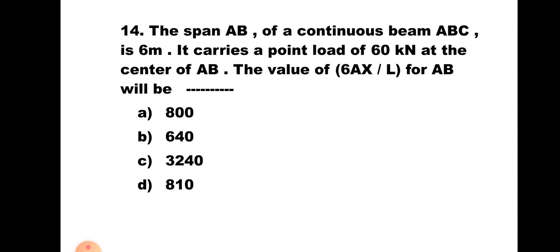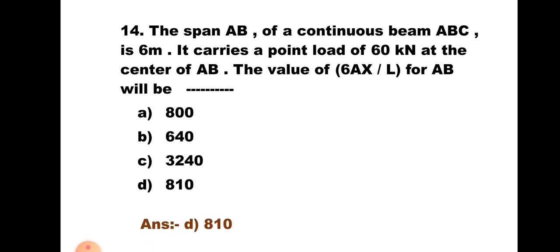Question number 14. The span AB of a continuous beam ABC is 6 meter. It carries a point load of 60 kilonewton at the center of AB. The value of 6AX̄/L for AB will be: A. 800, B. 640, C. 3240, D. 810. This is the continuation of the previous question — use the area of the free BMD calculated before, put the value of X̄ and L. The answer is 810. Hence the correct answer is D, 810.